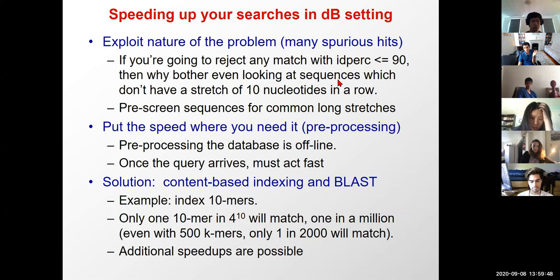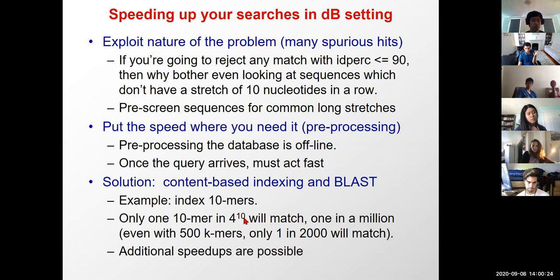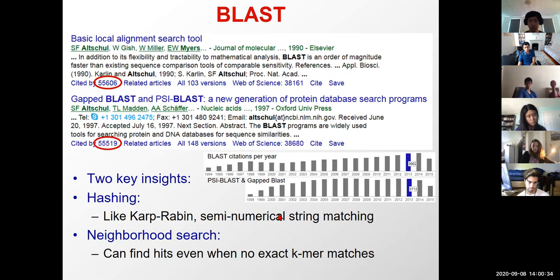We exploit the distinct nature of the database search problem: if we're going to reject any match with less than 90% identity, why bother looking at sequences that don't have a stretch of 10 nucleotides in a row? We can pre-screen sequences for common long stretches. We put the speed where we need it: pre-process the data offline, so when the query arrives we act super fast. Content-based indexing — index all 10-mers. Only 1 in 4^k (one in a million for k=10) will match.